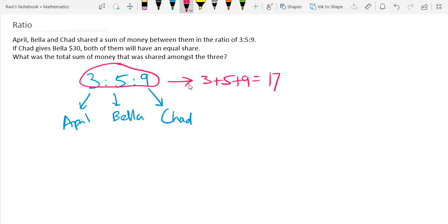So we can treat this as a form of equation. So let me rewrite it using x. So 3x plus 5x plus 9x is equals to 17x. So x represents one part of your money, one part or one portion of the ratio. So we have a total of 17 portions.